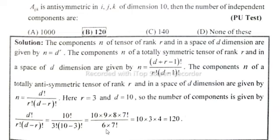3 factorial is equal to 6. 10 factorial can also be written in the form of 10 cross 9 multiply 8 multiply 7 factorial. Numerator 7 factorial denominator 7 factorial cancel.